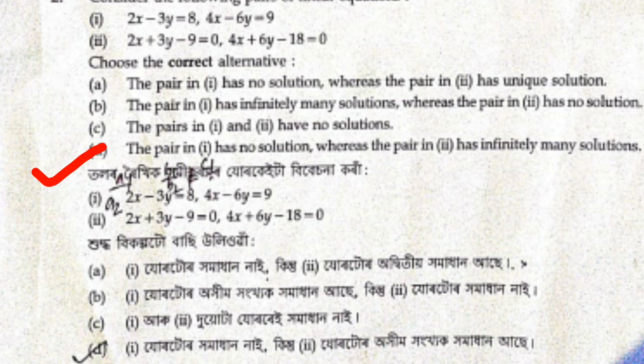The next question involves the equations: 2x minus 3y minus 8, and 4x minus 6y equal 9. Also: 2x plus 3y minus 9 equals 0, and 4x plus 6y minus 18. The right answer is D.